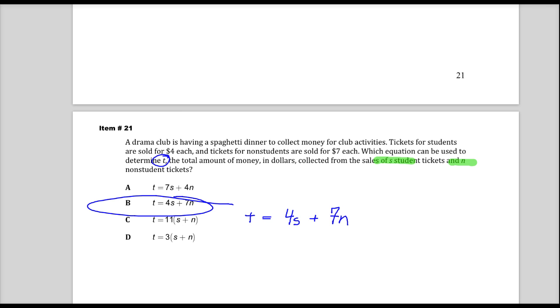Let's look at the other sections to see why they're wrong. I think maybe that would be more important. A says the total is equal to 7 times students, but that doesn't make any sense because we're told that students cost $4. So I can't make $7 from one student ticket sale.